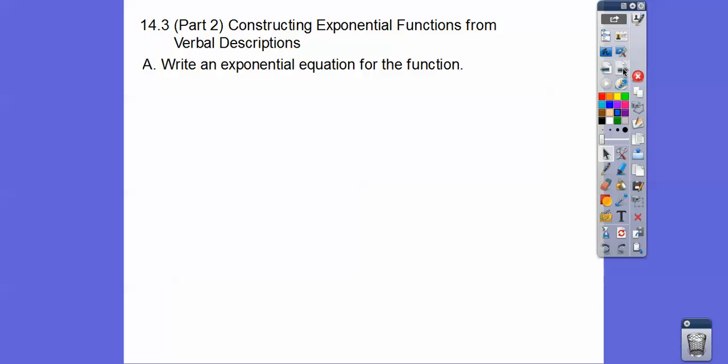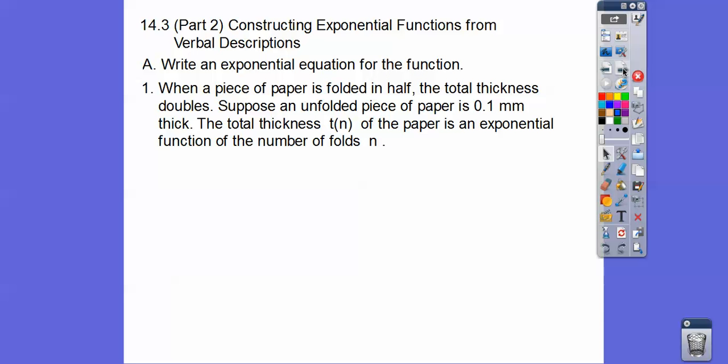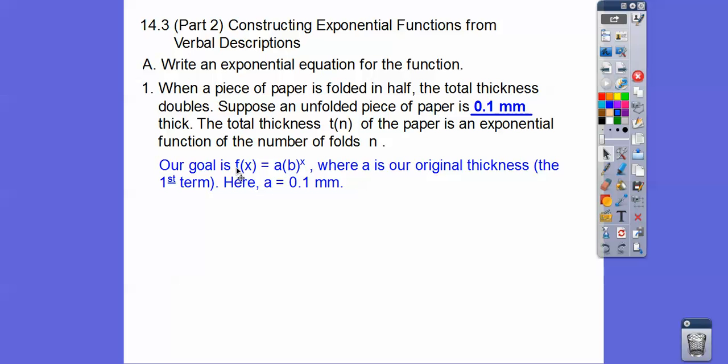So we're going to write an equation of the exponential function. When a piece of paper is folded in half, the total thickness doubles. Suppose an unfolded piece of paper is 0.1 millimeters thick. The total distance, which is T sub n or T of n, of the paper is an exponential function of the number of folds right here. So our goal is to get F of x equals, in fact this is T of n. But exponential functions are F of x equals A times B to the x. A is our original thickness, it's our first number, and so here's our original thickness before we started folding it right here.